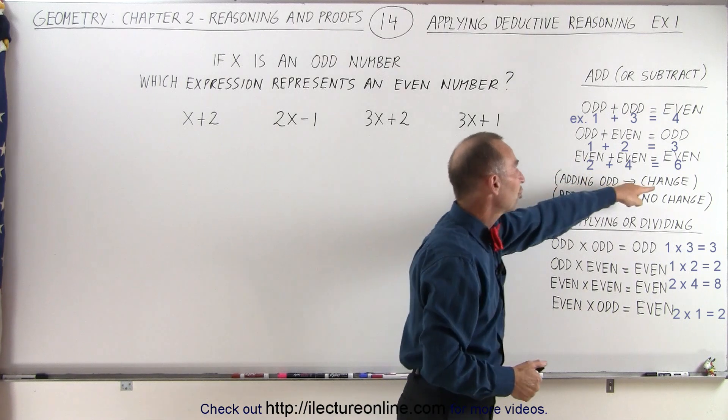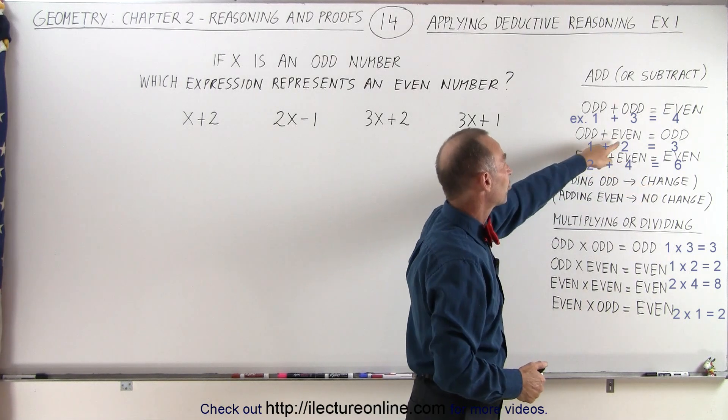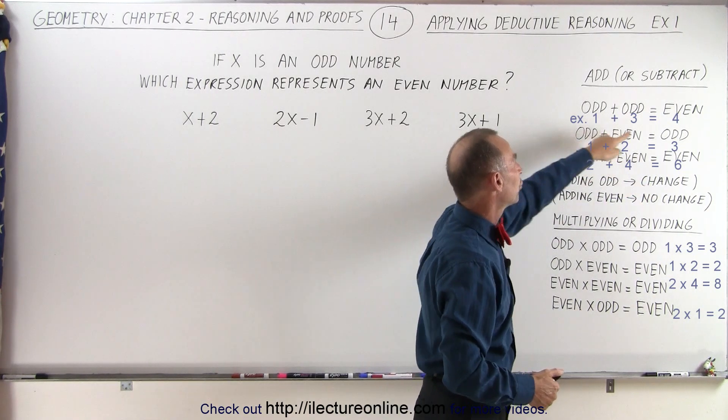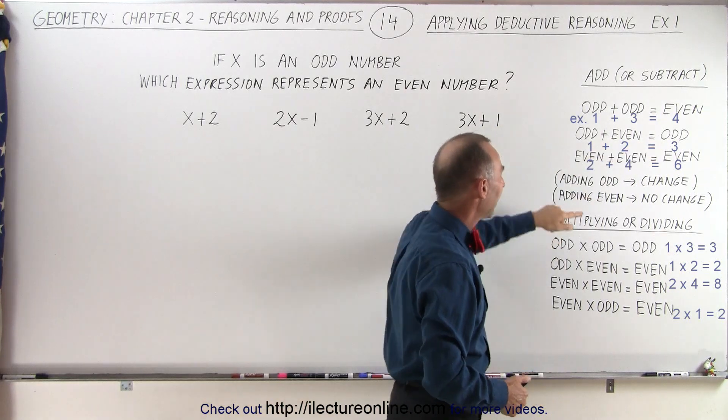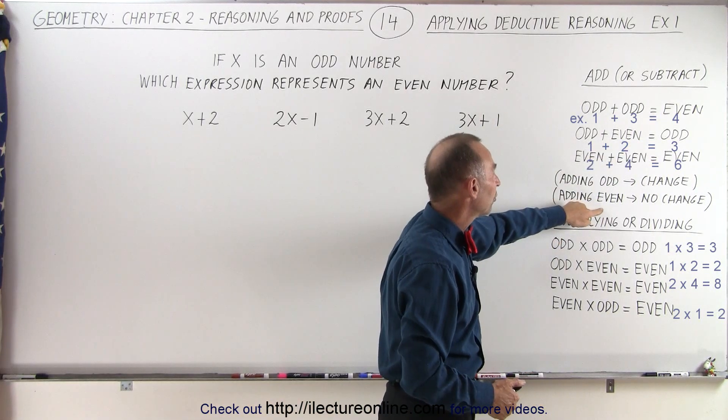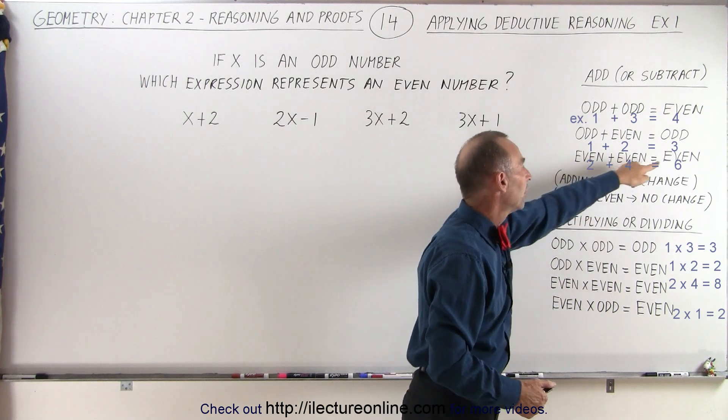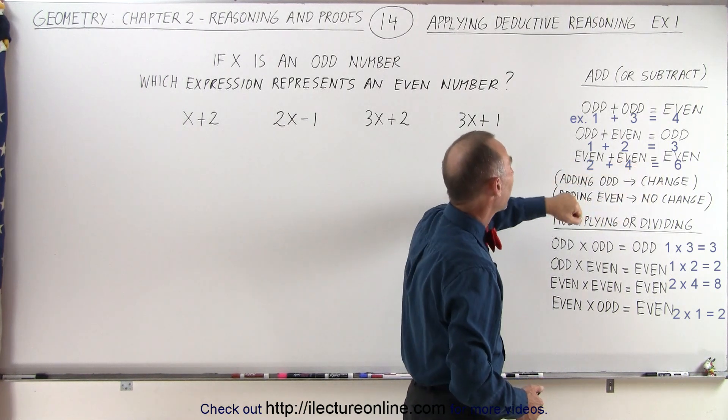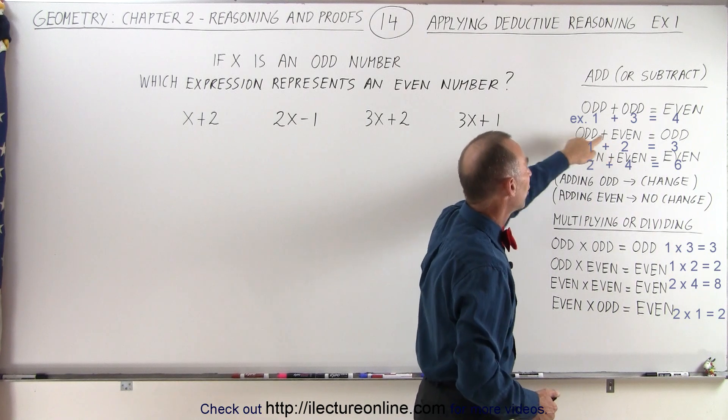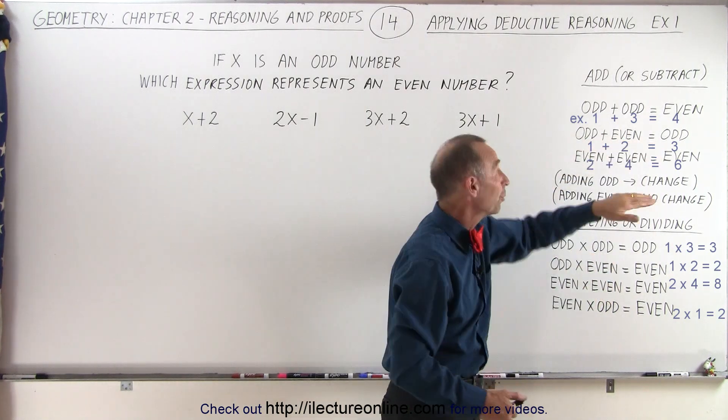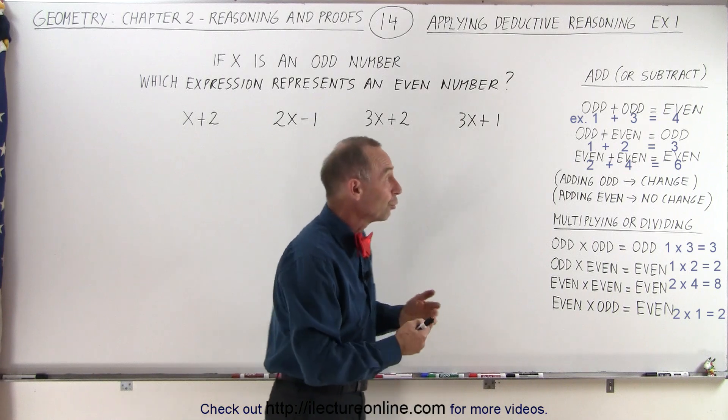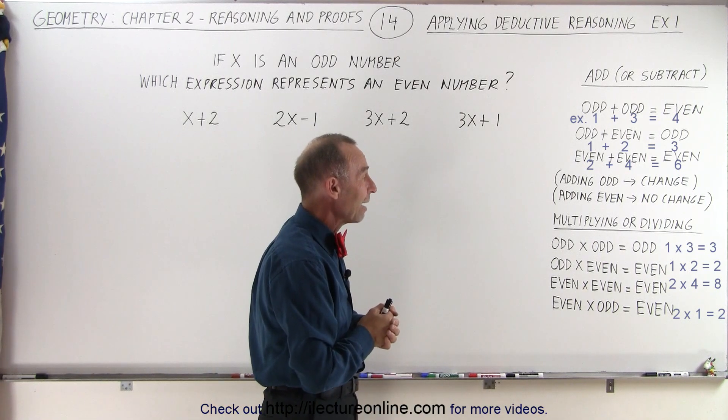In other words, adding an odd number will change what you started with. So if you start with an even and you add an odd, you then become odd. And if you add even numbers, there will be no change. In other words, add an even to an even, it'll stay the same. And if you add an even to an odd, you'll remain odd. So there's different ways of looking at the rules, but that's basically what we have.